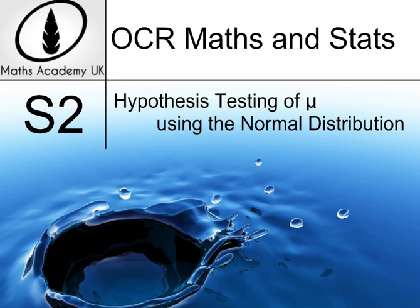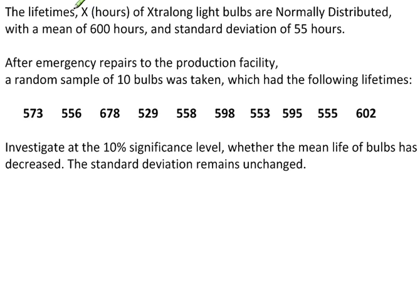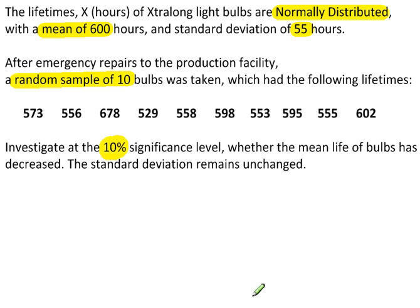Hypothesis testing of the population mean of a continuous variable using the normal distribution. The lifetime of bulbs are normally distributed with a population mean of 600 and standard deviation 55. A random sample of 10 were selected with the following lifetimes. We can work out the sample mean from these values. We're going to use a 10% significance level to investigate if there has been a decrease in the lifetime of the bulbs, so this will be a one-tailed test.